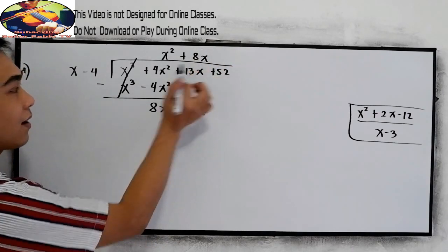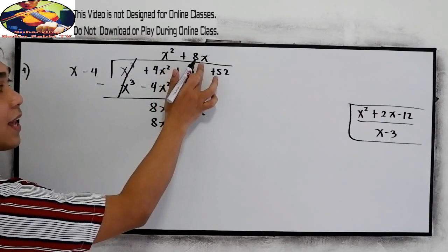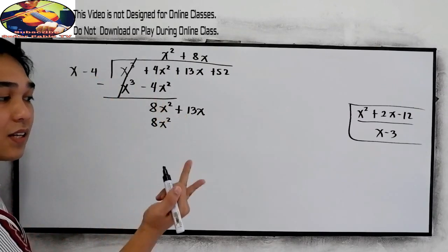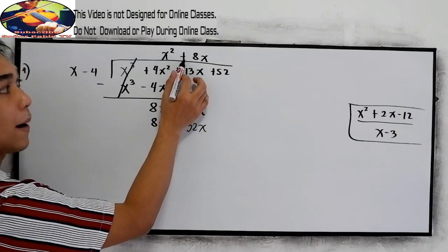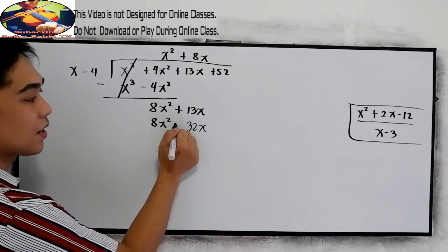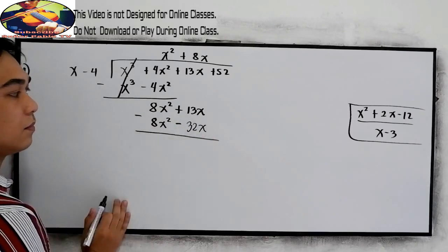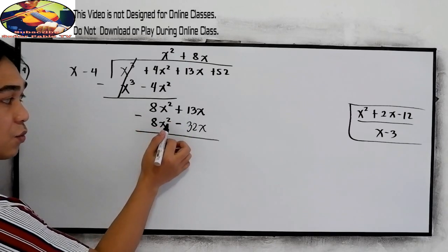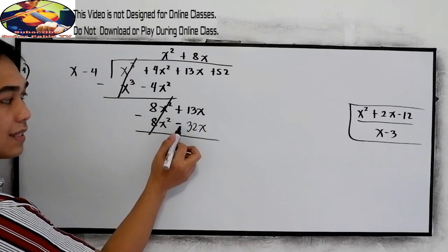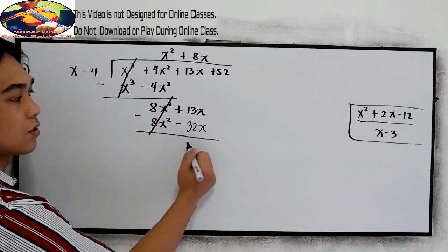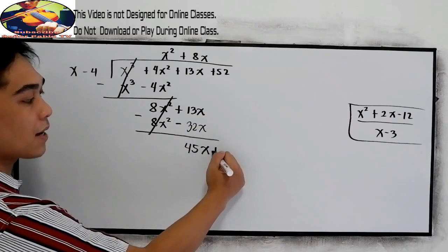Align. 8x times x is 8x squared. 8x times negative 4: 8 times 4 is 32, so negative 32x, since positive times negative gives us negative. Now subtract. 8x squared minus 8x squared gives us 0. 13x minus negative 32x gives us 45x. Now bring down positive 52.